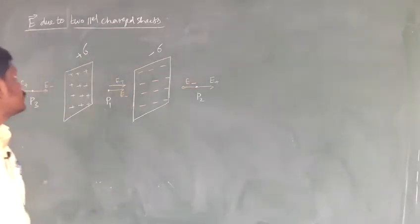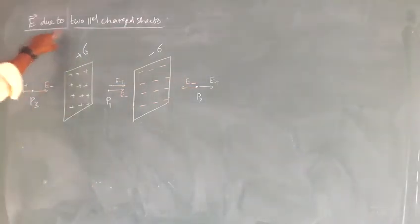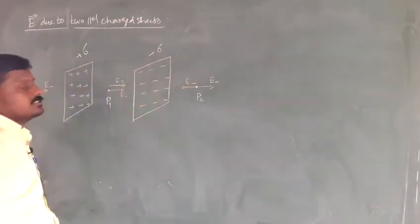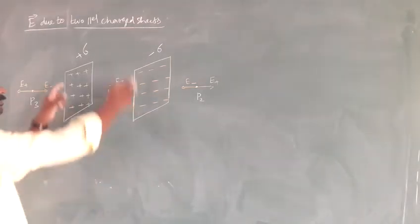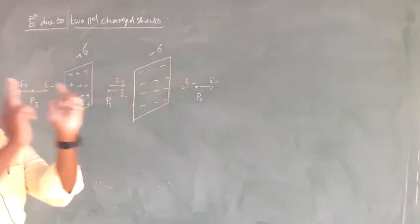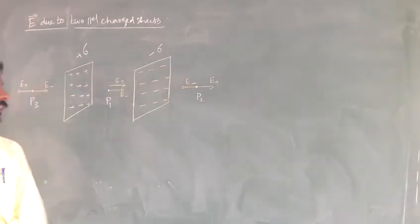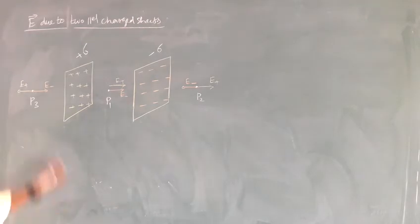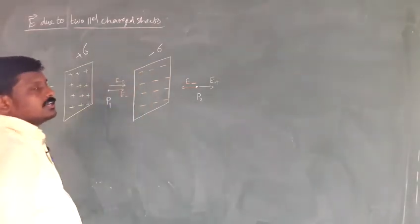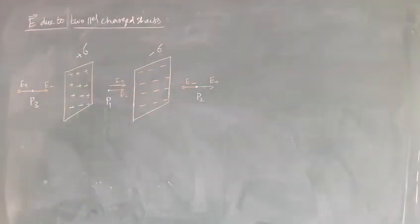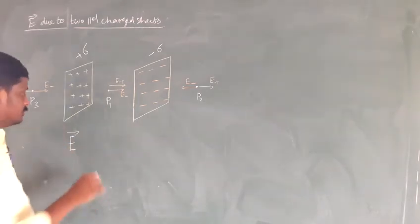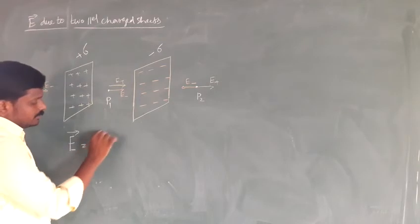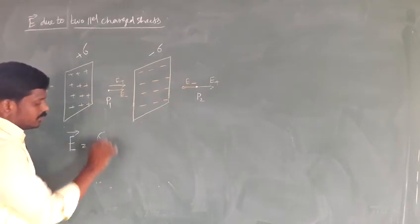Good morning students. Now we are going to discuss the electric field due to two parallel charged sheets. One plate is fully positive and another one is negative, so two charged sheets are parallel. The electric field due to one infinite charged sheet is E equals sigma by 2 epsilon naught.